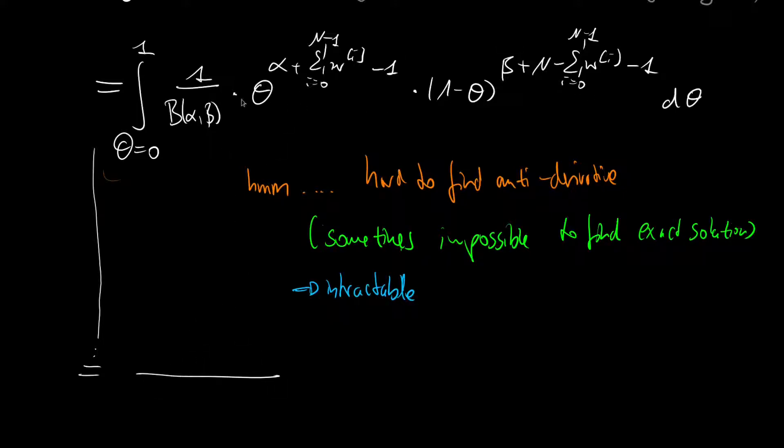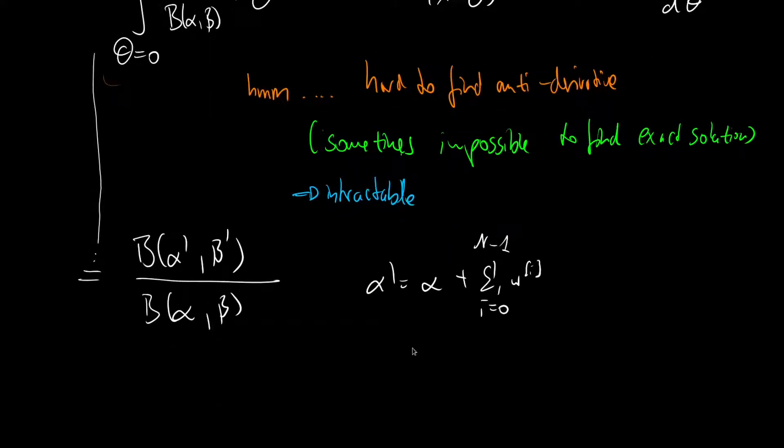I will just give the solution. If you evaluate this integral, the denominator will be the beta function of alpha and beta. And the numerator will be the beta function of alpha prime and beta prime, where alpha prime is, similarly to the posterior, alpha plus a summation from i=0 to n-1 over the i-th weather sample. And the beta prime is beta plus n minus the summation over all observations.